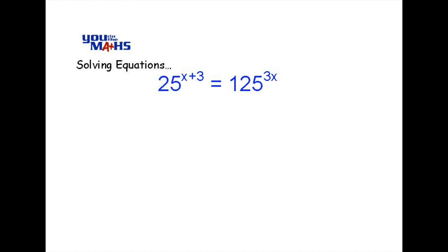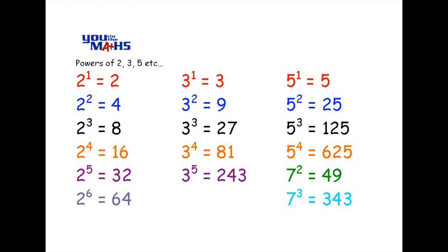Let's have a look at another example where we've got 25 and 125 to some powers. Our first step, because the unknown is amongst the indices, is to try to rewrite these as a common base. Here's our chart. So look for 25 and 125 to see if we can rewrite them. And you can see that both of those numbers can be expressed with a base of 5 to some power.